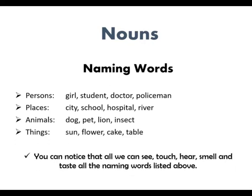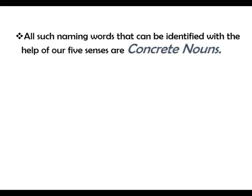You can notice that we can see, touch, hear, smell and taste all the naming words listed above. That means we can use our five senses to identify these naming words. Therefore, all such naming words that can be identified with the help of our five senses are concrete nouns.